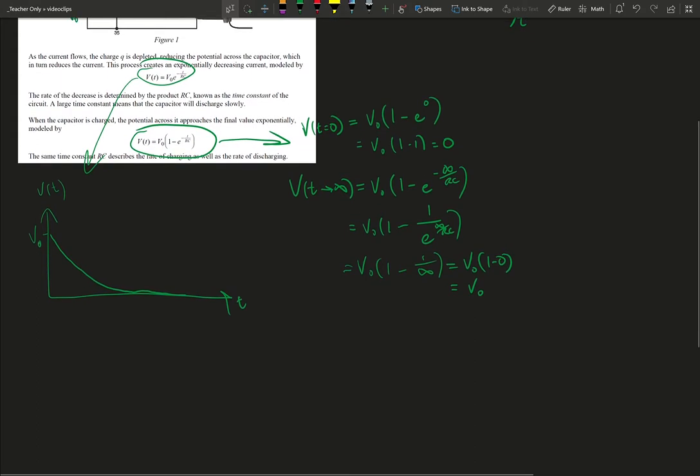So V at t equals 0 is the same as V0 times e to the minus t over RC, which is the same as V0 times e to the 0. And anything to the 0th power is 1. So we really just get V0.